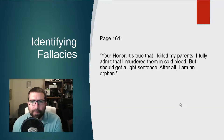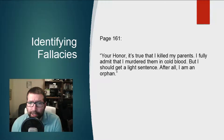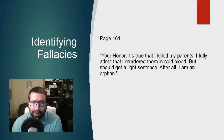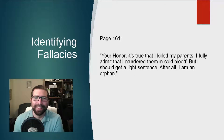The first one is on page 161. Here it goes: 'Your honor, it's true that I killed my parents. I fully admit that I murdered them in cold blood, but I should get a light sentence. After all, I'm an orphan.' Why is he an orphan? Because he killed his parents — it's his own fault.